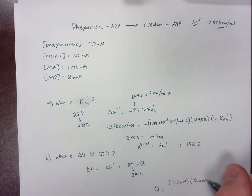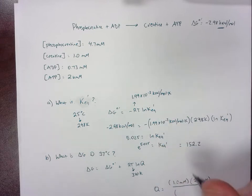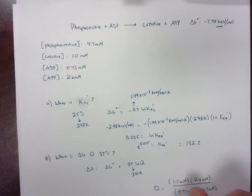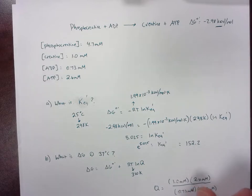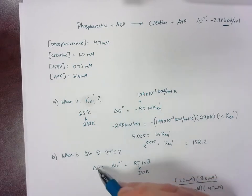So we have ATP, which is 2.6 millimolar, and then we have ADP, 0.73 millimolar, and phosphocreatine, 4.7 millimolar. And then when we do this, we actually get a Q of 0.758. And then we're going to plug that in here and solve for the delta G.